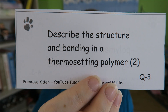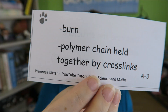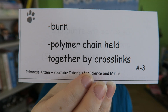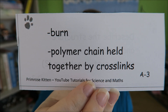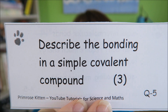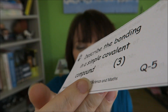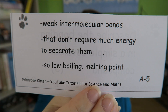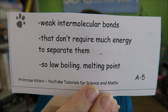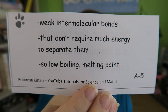Describe the structure and bonding in a thermosetting polymer. In a thermosetting polymer, the polymer chains are held together by cross-links, which means it is going to burn. Describe the bonding in a simple covalent compound. They have weak intermolecular bonds, which doesn't require much energy to break them, so they're going to have a low boiling and melting point.